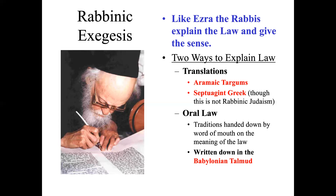Behind the need for interpretation, rabbinic Judaism developed the concept of oral law — standardized rabbinic interpretations of the law. The oral law represents a systematizing of Jewish traditions about the law. It came to be written down in what is called the Babylonian Talmud. These oral laws were handed down orally, but then around AD 200 they started to be written down. The Mishnah was the original writing of them down, and the Gemara was the Aramaic commentaries added to it. Those two together constitute the Babylonian Talmud — traditions of hundreds of rabbis up until about AD 600.